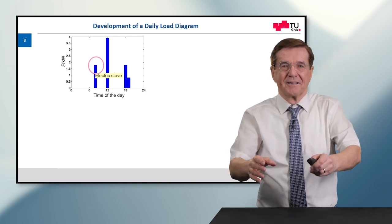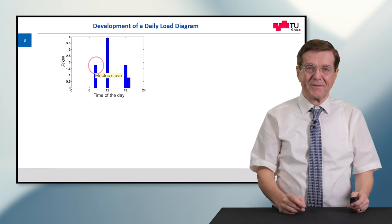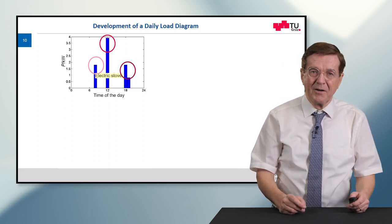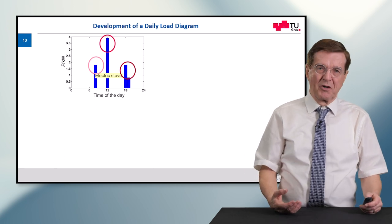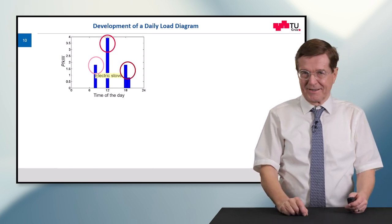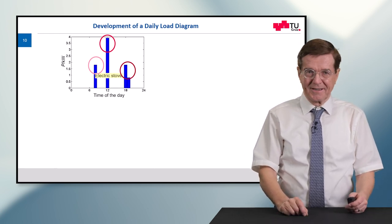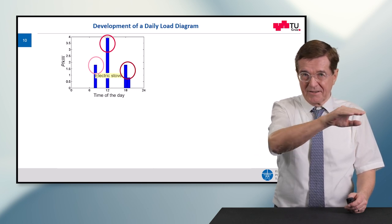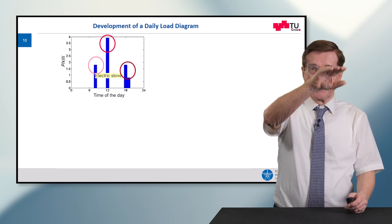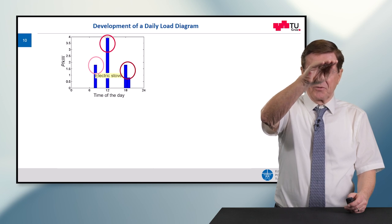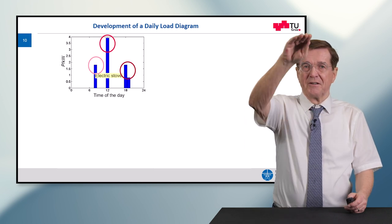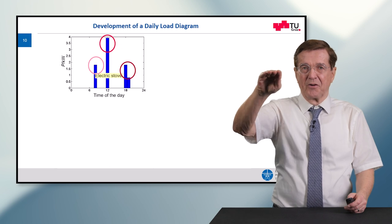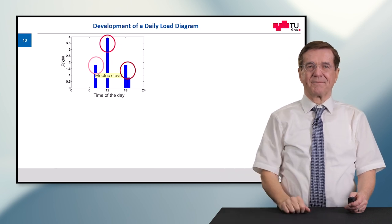In the evening we warm up leftovers and maybe make a pudding. So you see the load profile of the stove: it goes up to two kilowatts, switched off, then four kilowatts, switched off, then up to four and one, and then it's zero again.